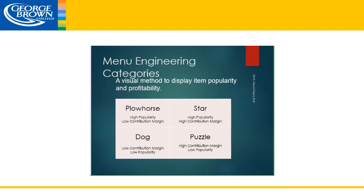Here are the four menu item classifications with respect to menu engineering. Starting on the top right-hand side, we have our stars. Those are items that have a high popularity and a high contribution margin in comparison to the average. These are usually our star dishes — we sell a lot of them and we make a lot of money off them, so these are great things to have.